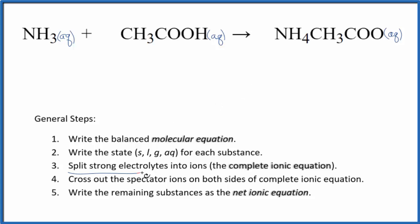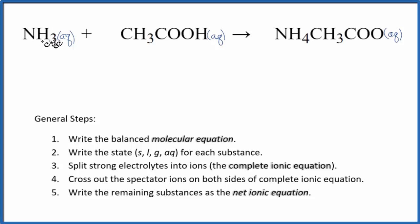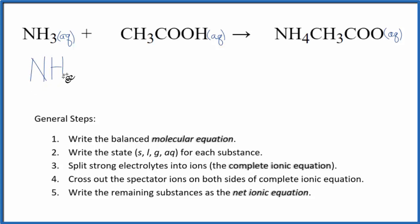Now we can split the strong electrolytes into ions — that'll be the complete ionic equation, also called the total ionic equation. Here's the thing: you need to know that ammonia, NH3, although it dissolves in water and is aqueous, it is a weak electrolyte. So it's not going to dissociate into its ions. We just write NH3 — it's aqueous, but it doesn't split apart.